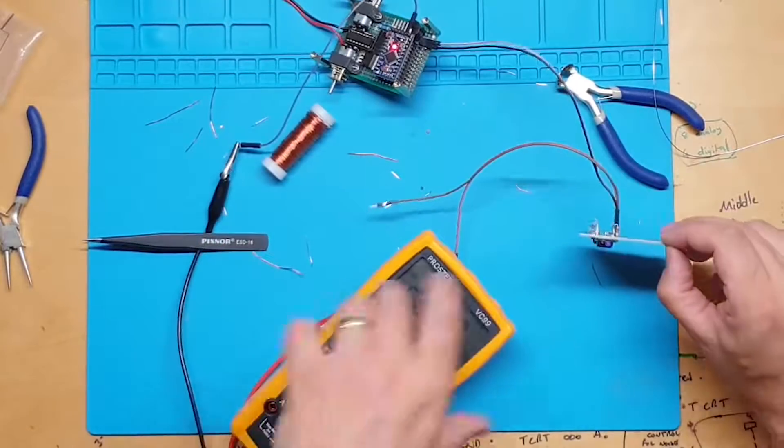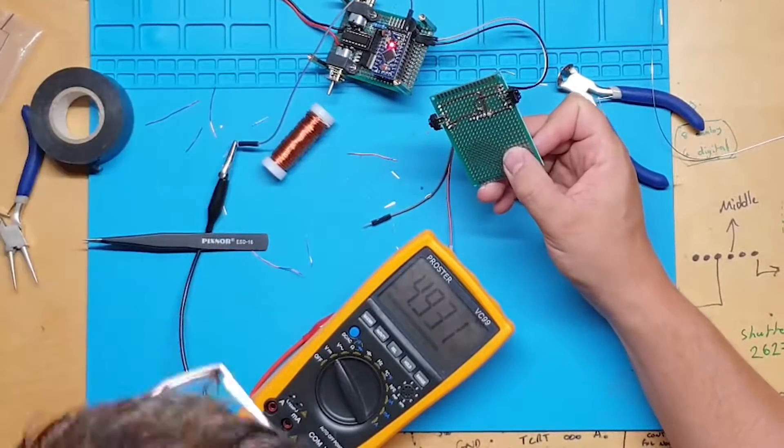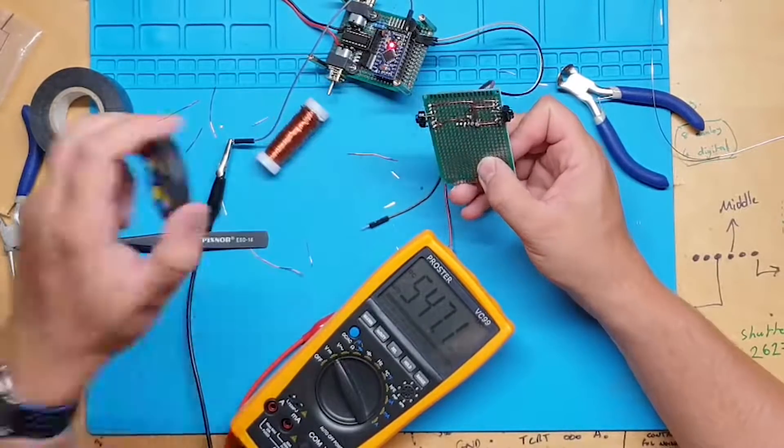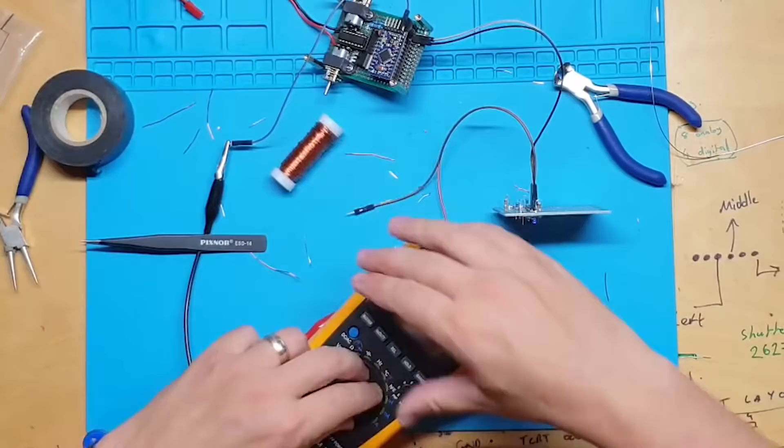When we get maximum voltage, it indicates that an object is far away. In our scenario low voltage indicates the wheel hole and high voltage indicates the black part of the wheel.